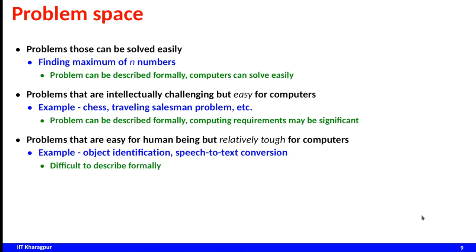The next category is problems that are easy for human beings but relatively tough for computers, such as object identification — given an image, identify an object or recognize a face. A human can easily identify a human face, but describing that problem formally is not straightforward. That is another class of problem.